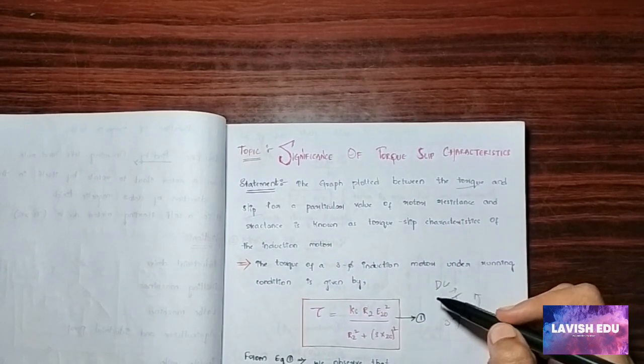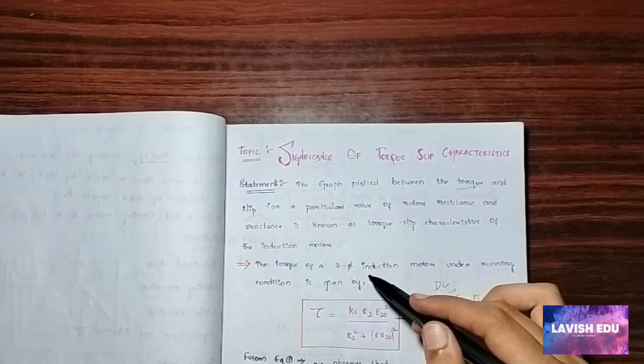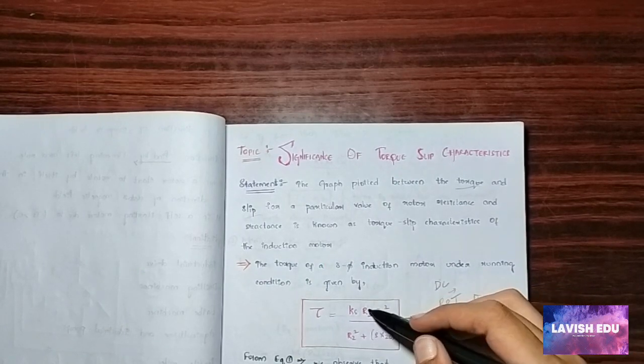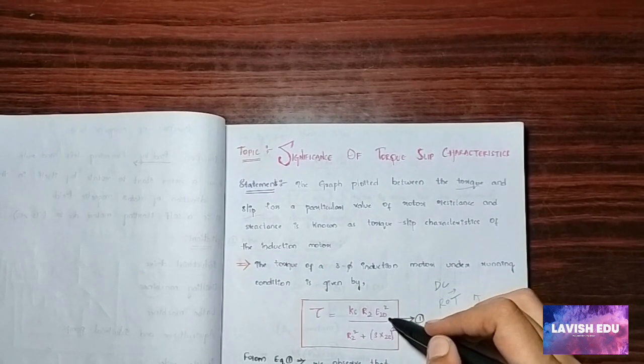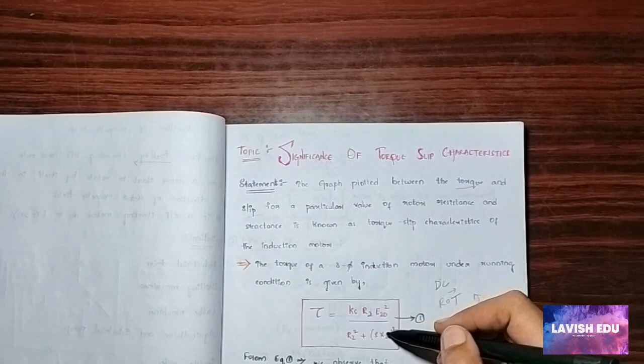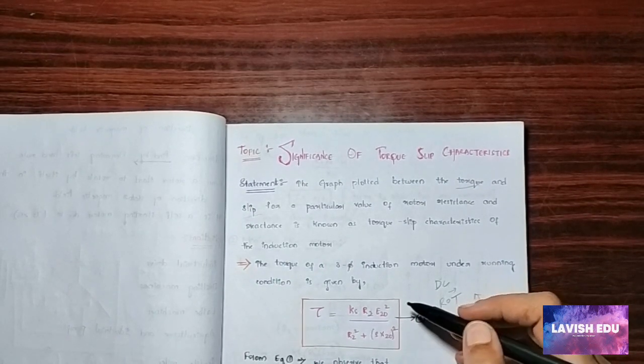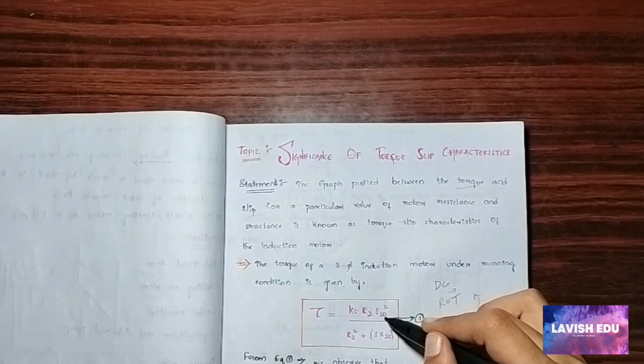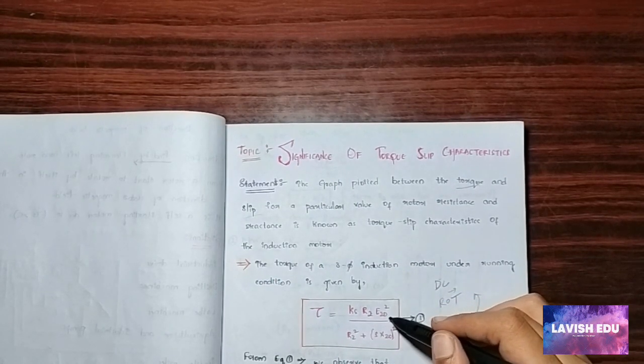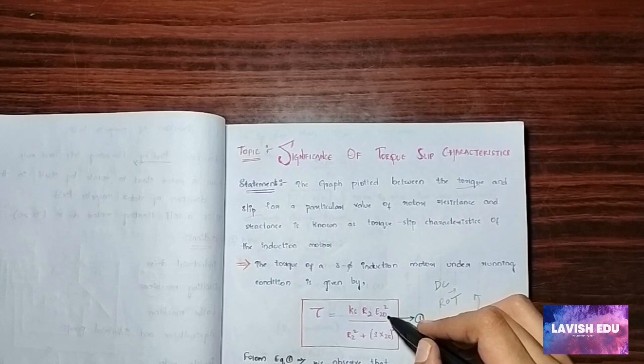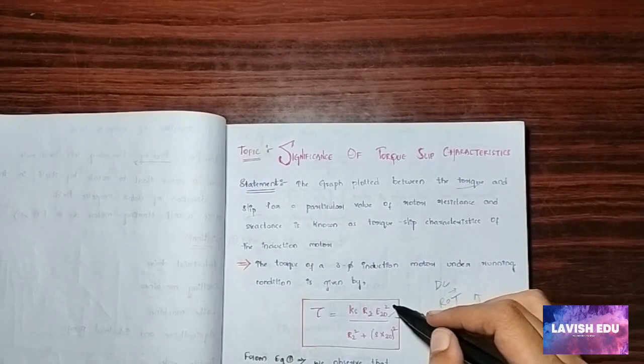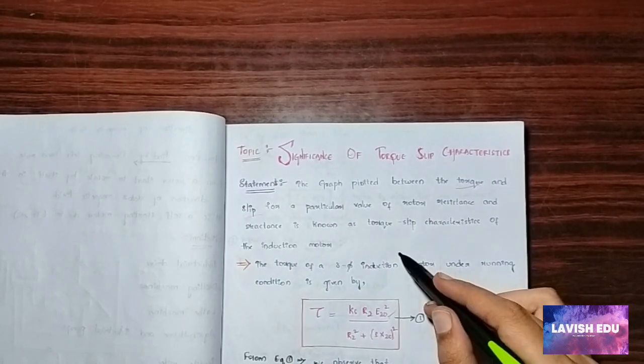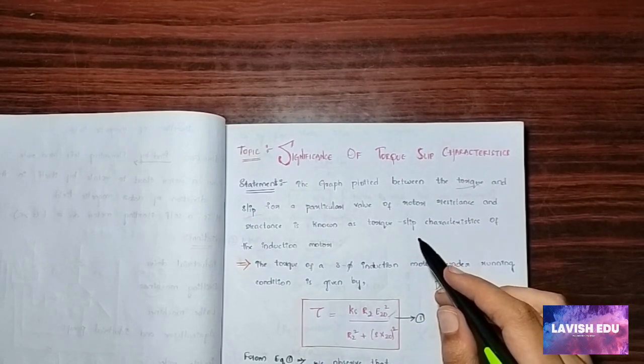Now we know that the formula of torque of a three-phase induction motor is T = K·s·R2·E20² / (R2² + s²·X20²). Memorize this formula because this is the calculating formula. If I explain to you it will be a long video, so just memorize this formula. If you write this formula directly for this question they will give you a mark compulsory.